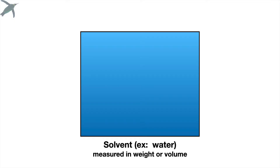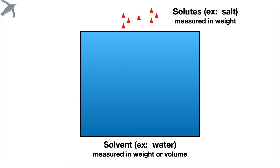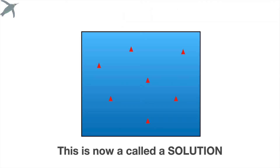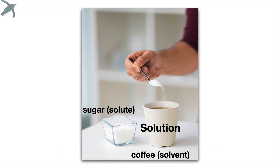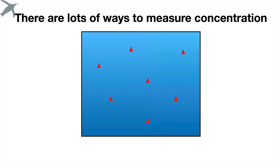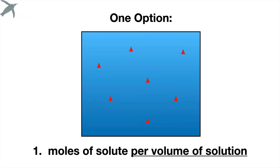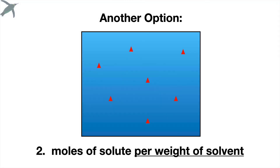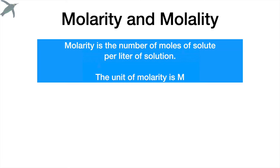Here we have a solvent — for example, water. You can measure the solvent in either weight or volume; that's important. Into the solvent, we're going to put solutes, like salt, and we can measure solutes in weight. When we put the solutes in the solvent, now we have a solution. This is not complicated — we do this all the time. The question then is, how sweet do you want your coffee? You're asking: what's the concentration of those things — the sugar or the salt — in the solvent? There are lots of different ways to measure concentration. We're going to look at two: moles of solute per volume of solution, or moles of solute per weight of the solvent. That's the difference between molarity and molality.